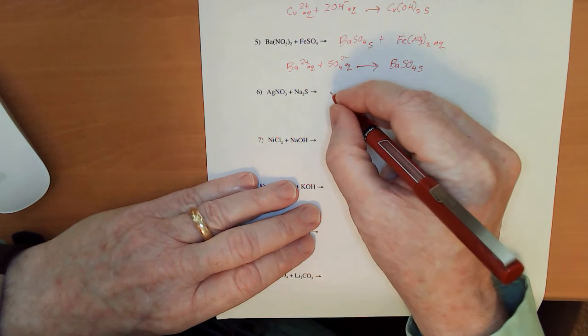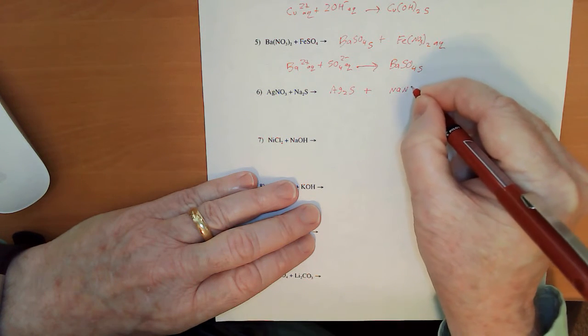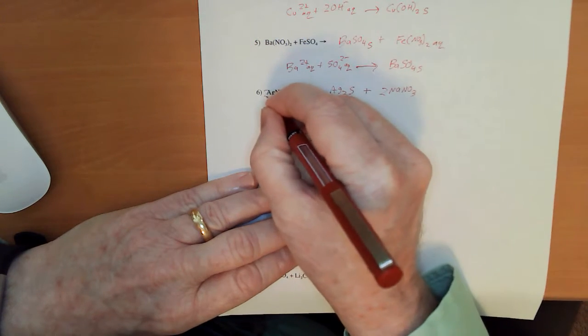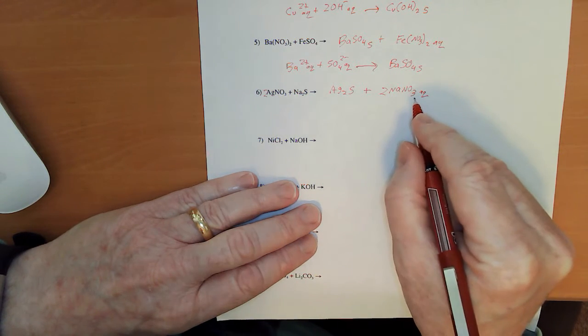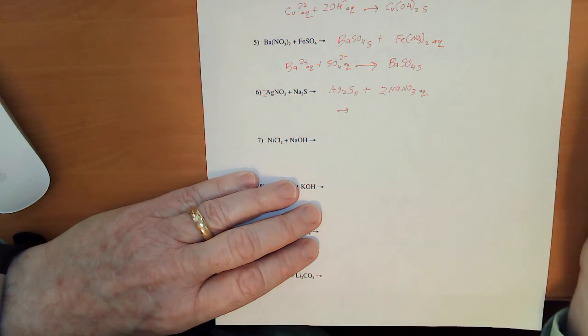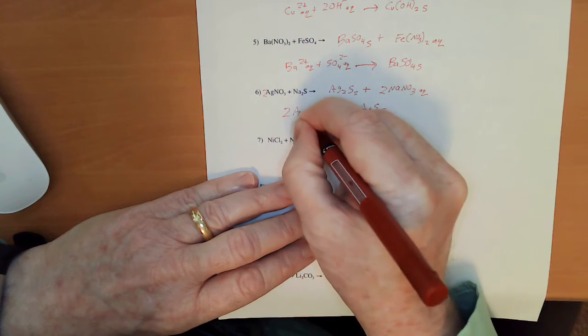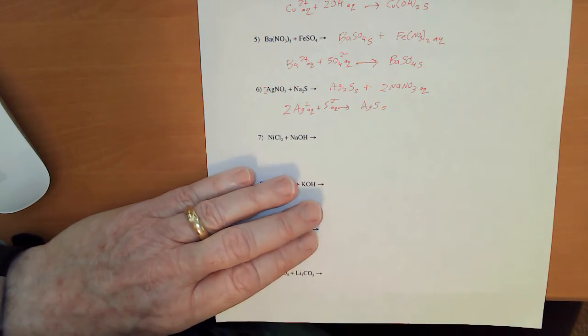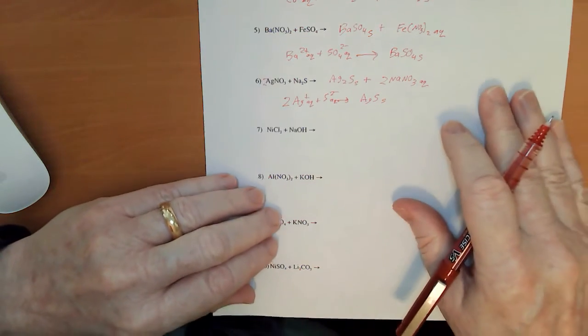Our next one. Ag2S and NaNO3. Now, I'm going to have to put a 2 there, and I'm going to have to put a 2 there for that to balance out. This is aqueous, because it's group 1, or because it's nitrate. Say it either way. Silvers are pretty much always going to precipitate out, except for nitrates. A couple other exceptions, but not a lot. Ag2S solid. So what do I have here? 2 Ag plus aqueous and an S2 minus aqueous. That's our net ionic, and remember we have to make sure that those are always balanced.